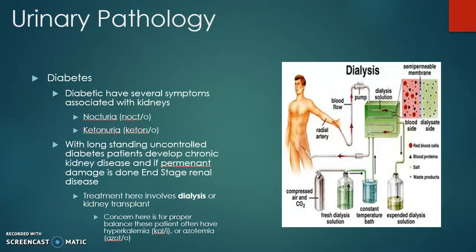Diabetes is a major issue in the medical profession. Symptoms associated with the urinary system include nocturia and ketonuria, since ketones are heavily associated with diabetes. The body breaks down certain things to meet its needs and produces extra ketones. Diabetic ketoacidosis occurs when there are too many ketones, sending the body into shock. Long-standing uncontrolled diabetes leads to chronic kidney disease — permanent kidney damage. Hypertension can also cause this, leading to end-stage renal disease.